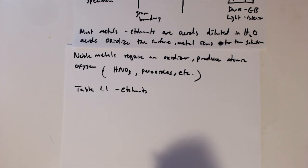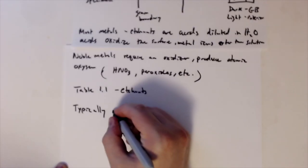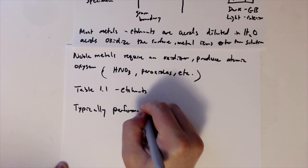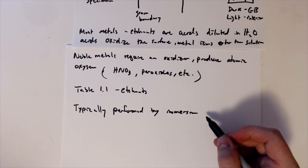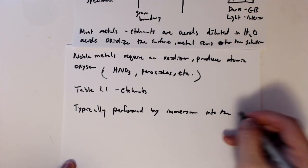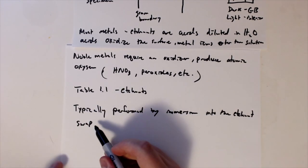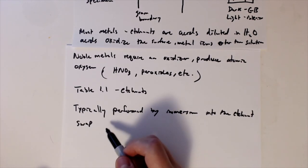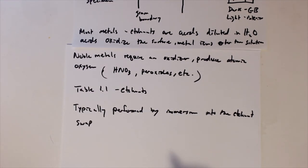Alright. One last thing to mention here in etching is that typically, this is performed by immersion. So basically we put our mounted specimen into the etchant. We can also swab. We can put the etchant on a swab and wipe that across the surface of the sample. So there's multiple ways to do this. There's also various electrolytic type of etching. So there's a number of different ways, but that's the general sort of overview of etching.